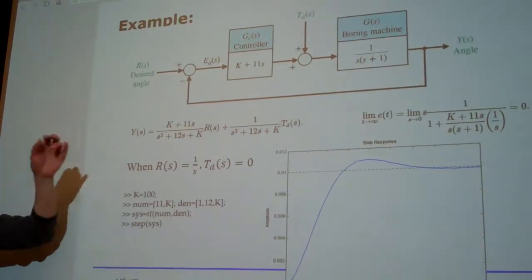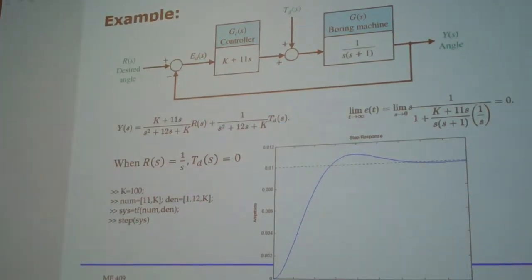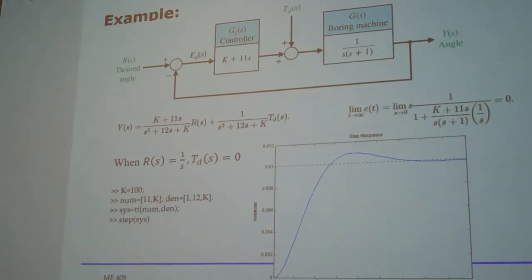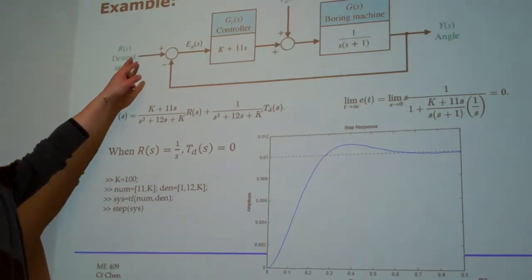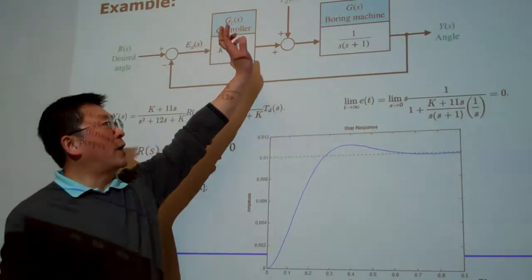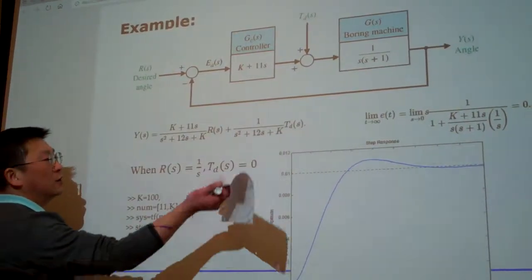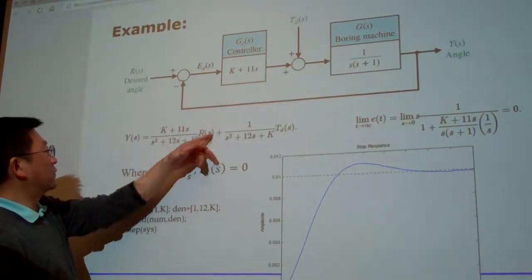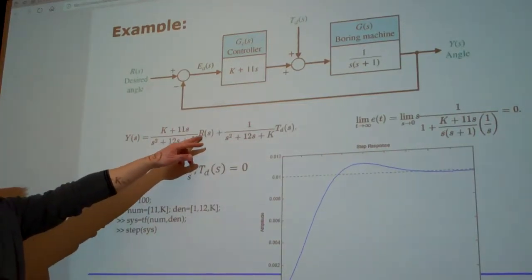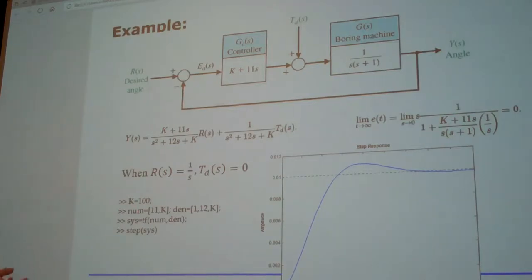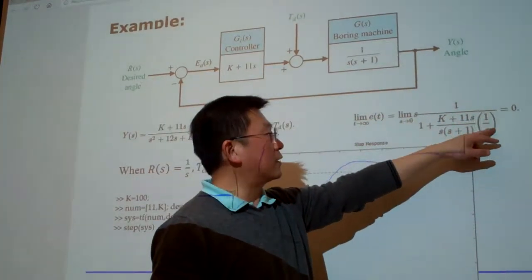Now for this case, then we can begin to do something. For the first case, assuming we only want to consider the influence of the input to the output by ignoring the disturbance, then we simply set the disturbance equal to 0. That means we consider only the first term, not the second term. Under this case, we consider a unit step input 1 over S. Under that situation, by hand, you should be able to calculate the steady state error.